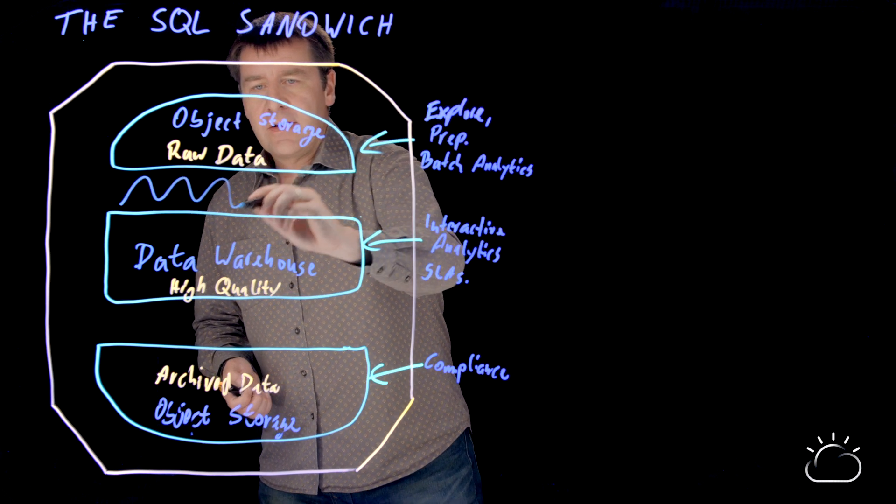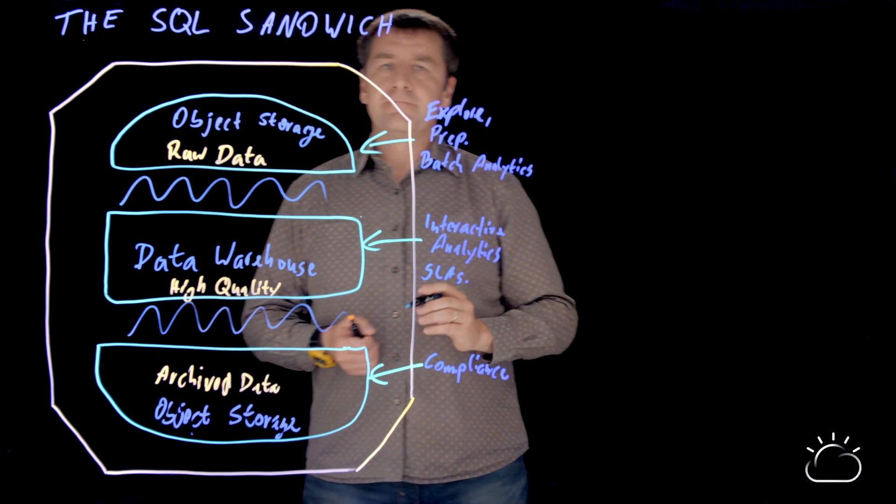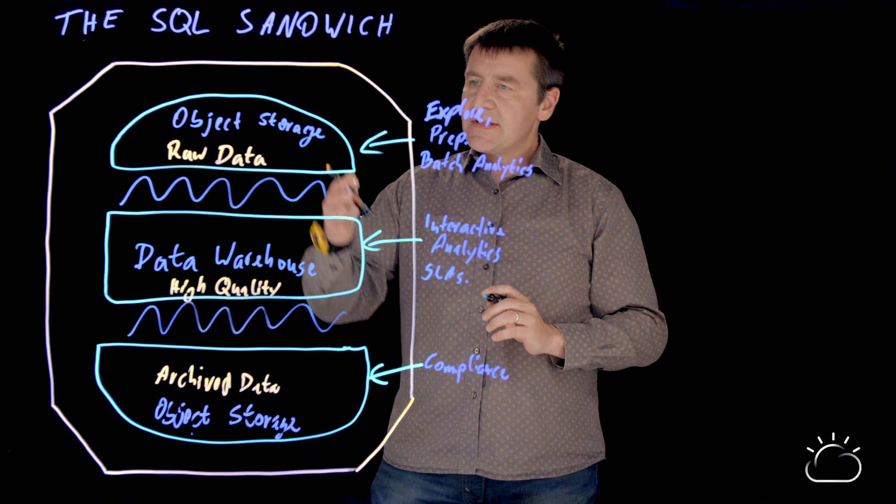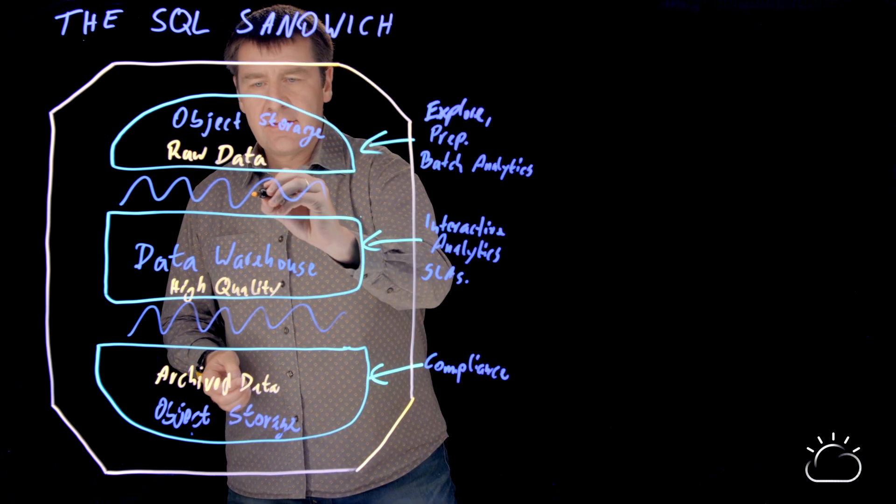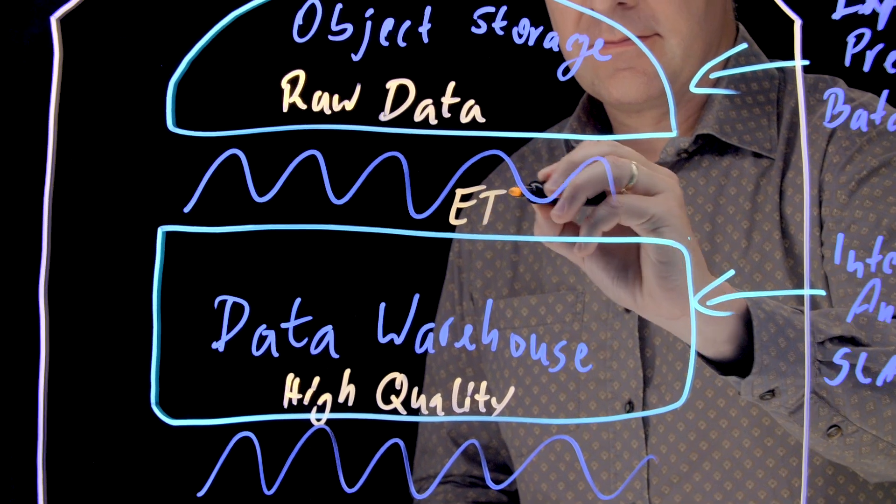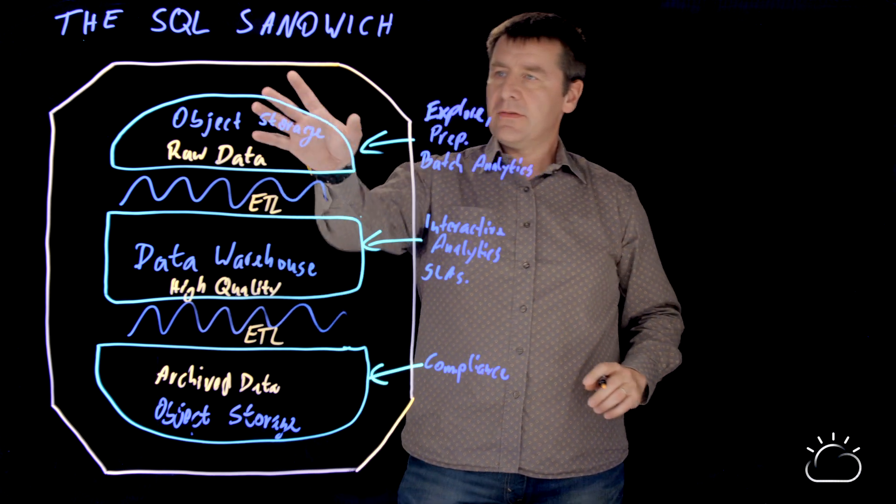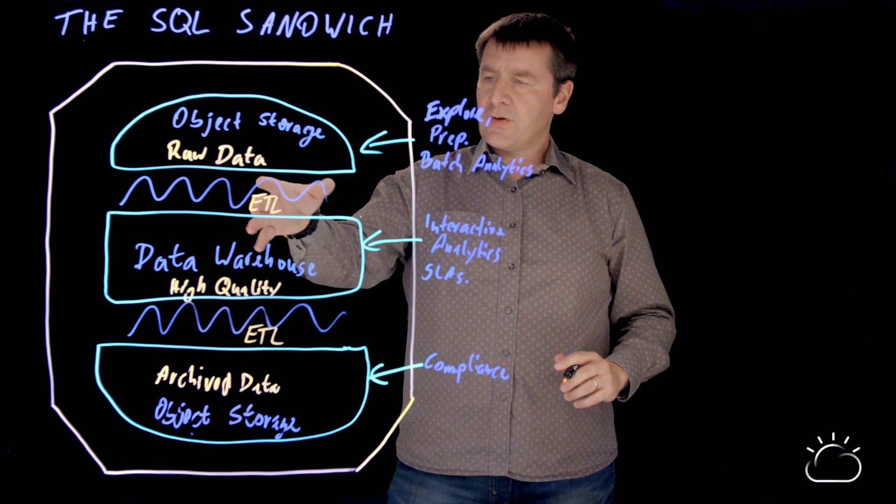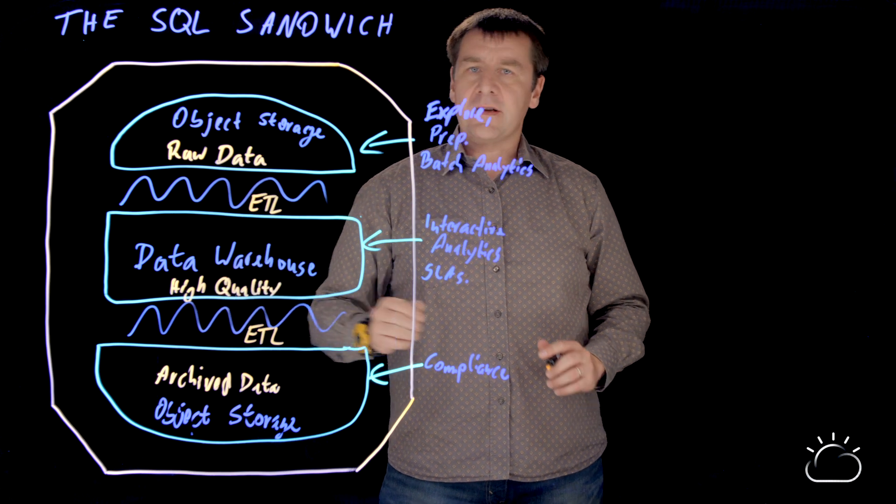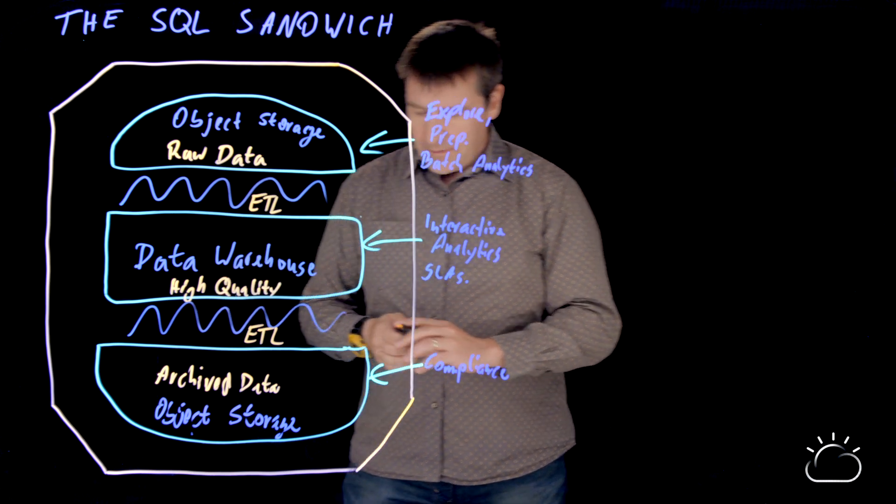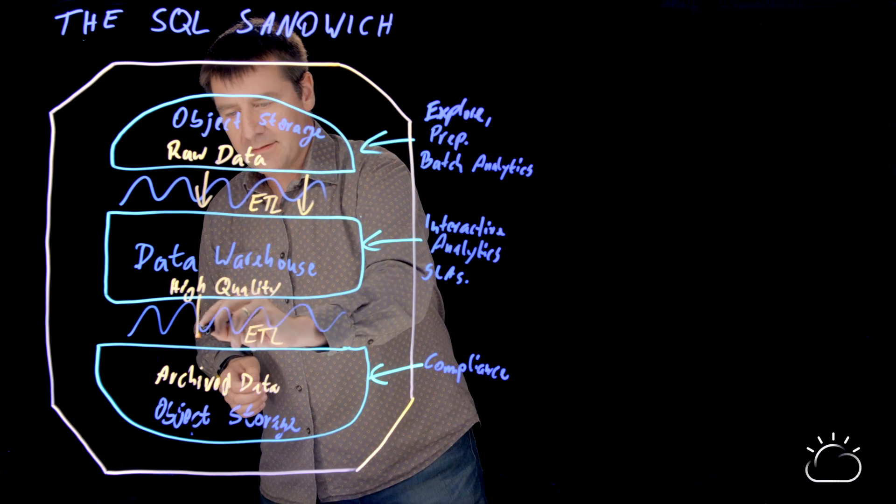Now, of course, a real sandwich shouldn't be as dry, so you want to have some sauce in there. So what is the sauce that glues these things together? It is basically an ETL mechanism. It allows you to read data from here and transform it so that it can be inserted here, and same from here to here. So data is traveling this way.